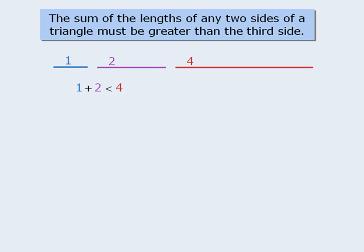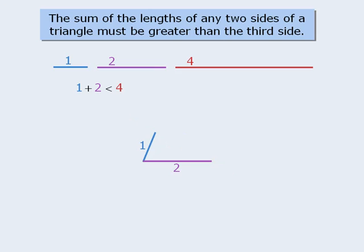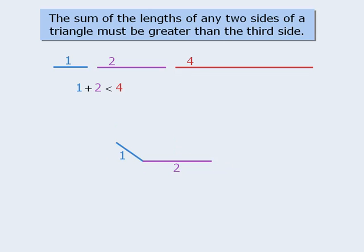Let's confirm this. First we will take the side with length 2 and add the side with length 1. Once the two sides are in place, the last side must connect their endpoints. When we try this, we can see that the third side is too long. So let's take the two sides and open them up to increase the distance between their endpoints. Now when we add the third side, we can see that it is still too long. Let's open up the two sides again until we have maximized the distance between their endpoints. Even still, the third side is too long. So it appears that it is impossible to create a triangle with lengths 1, 2, and 4.